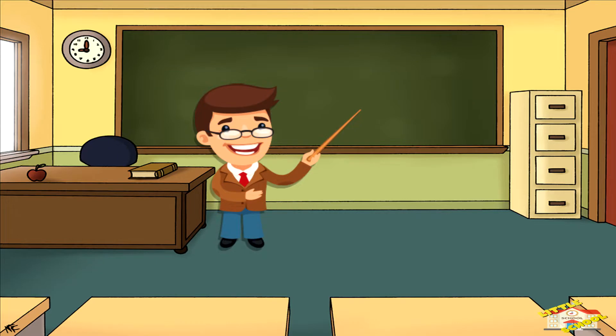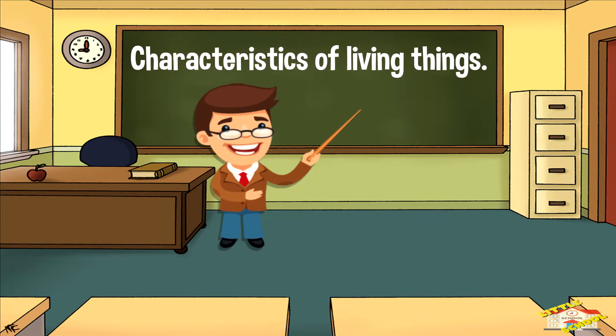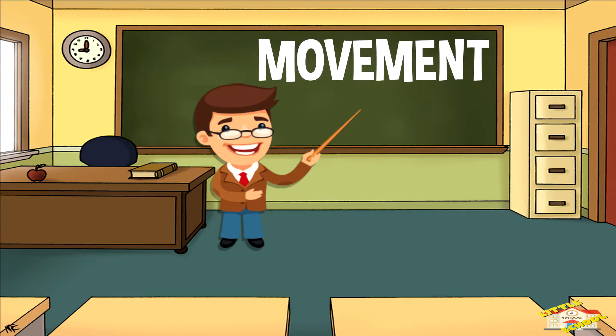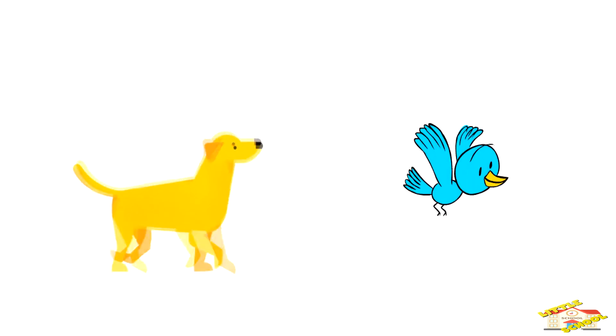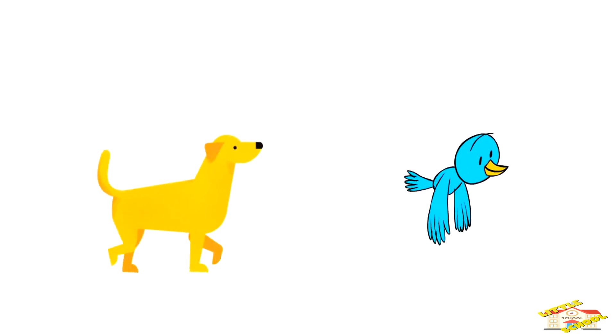In today's class we'll be going over the characteristics of living things. Let's start with movement — every living thing moves. Your dog loves to run, jump, and wag its tail when it's excited, and birds flap their wings to fly.